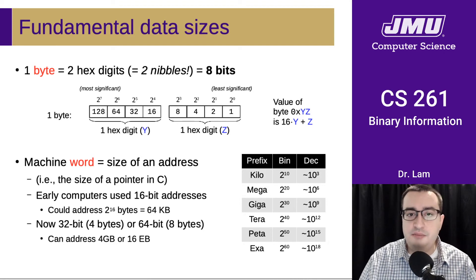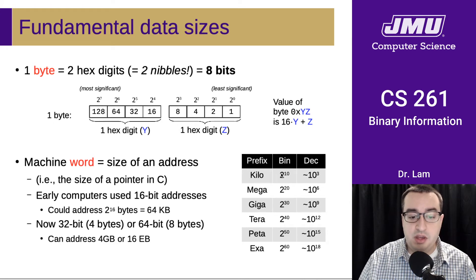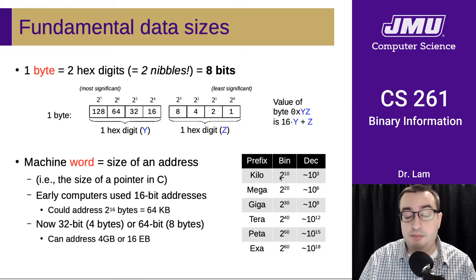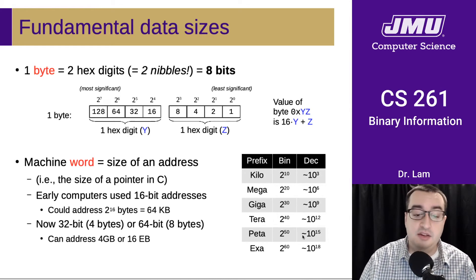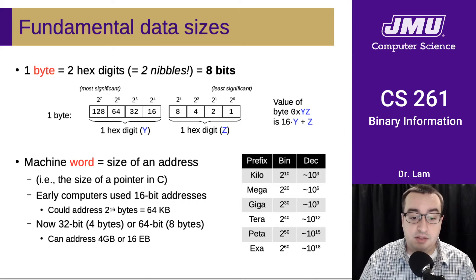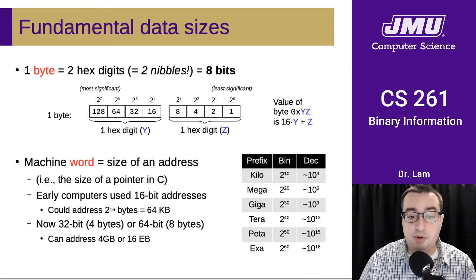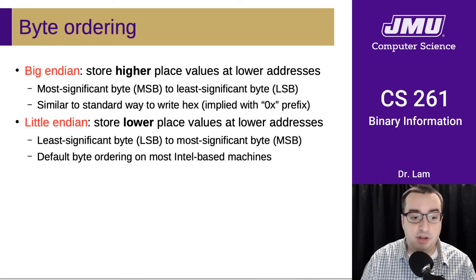Here are some prefixes that you may find useful to remember as we're working with this. 2 to the 10th bytes is called a kilobyte, 2 to the 20th is called a megabyte, then gigabyte, terabyte, petabyte, and exabyte. These are listed here with their rough decimal equivalents.